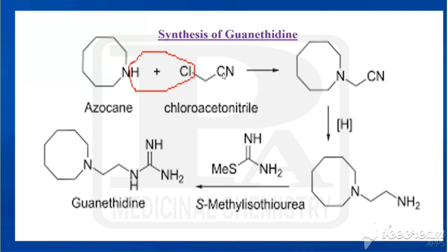To azocane we add chloroacetonitrile, whose formula is Cl-CH2-CN. By the addition of azocane and chloroacetonitrile, the H from the nitrogen combines with the Cl and is removed as HCl. The CH2-CN group is then added to the nitrogen of azocane.